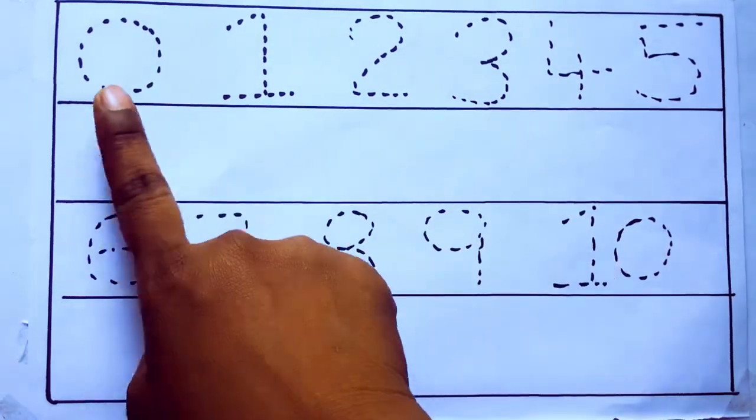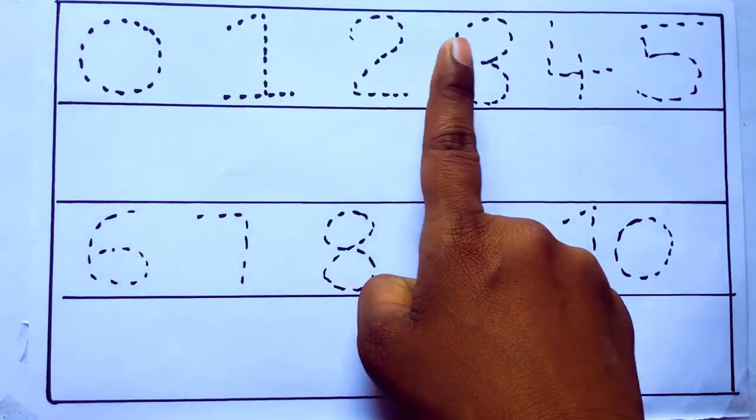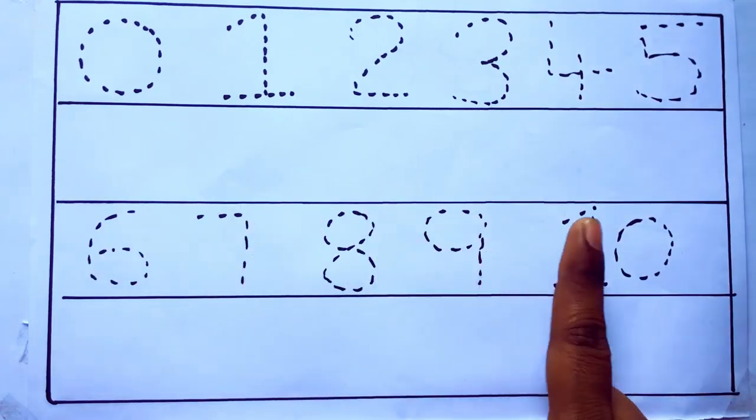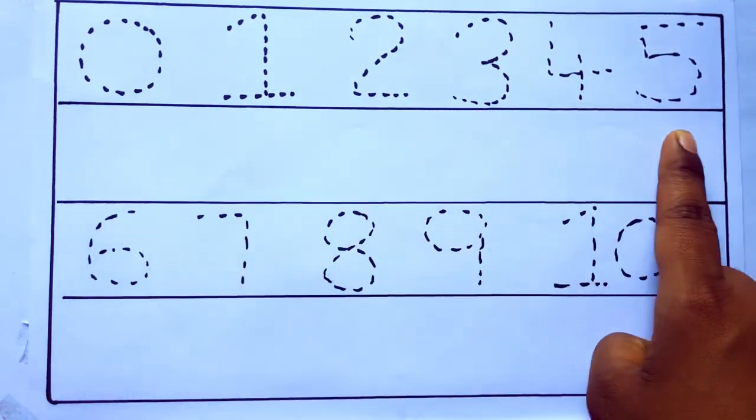0 to 10: 0, 1, 2, 3, 4, 5, 6, 7, 8, 9, 10, and rewriting the numbers.